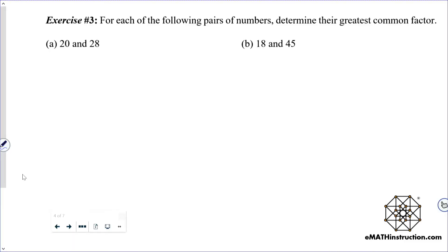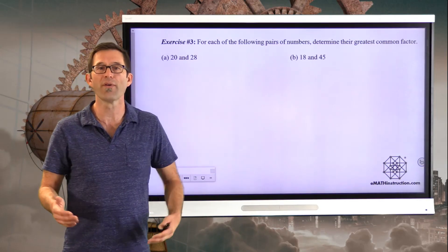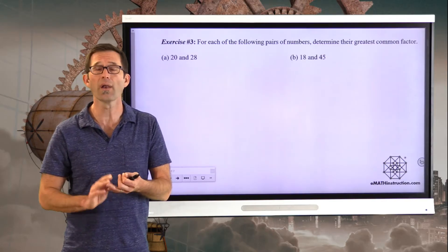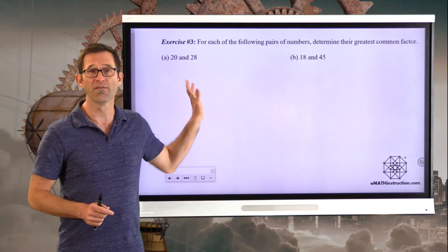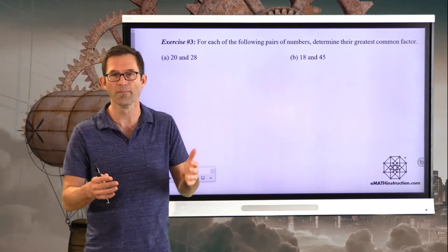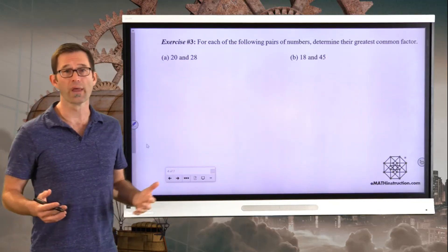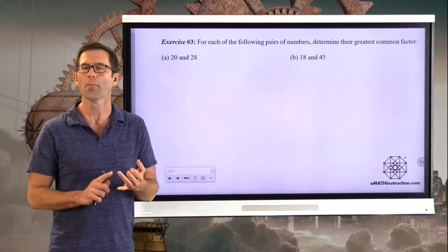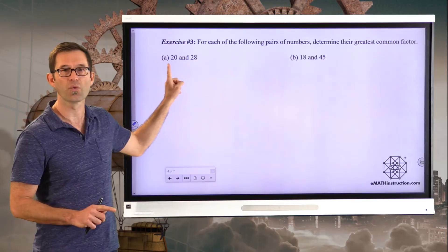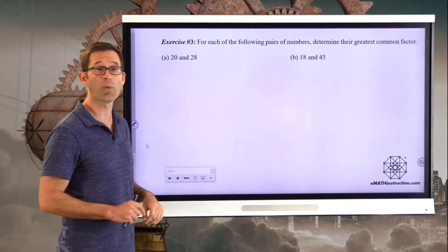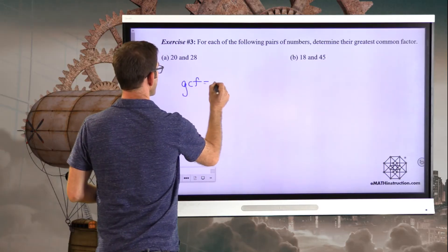Exercise number three. For each of the following pairs of numbers, determine their greatest common factor. So this is something that we did in the previous lesson. We want to find the greatest common factor. We did that by thinking about all the different factorizations, using factor trees, and also just by thinking about what the largest number is that divides into the pair of numbers evenly without a remainder. So let's try to think about it that way just for now because it kind of speeds things up. For instance, 20 and 28. If I'm looking for the greatest common factor of 20 and 28, I can think about the largest number that would divide into both. They're both definitely divisible by 2 because they're both even. But they're also divisible by 4, because 4 goes into 20 five times and it goes into 28 seven times. And there's nothing bigger, no number larger, that goes into both 20 and 28 evenly. So the GCF in the first problem is 4.